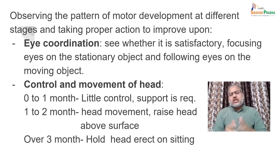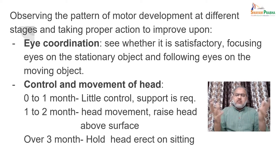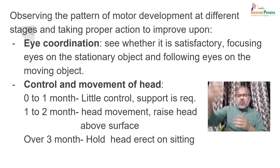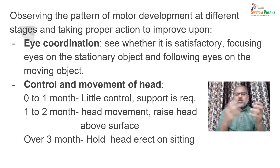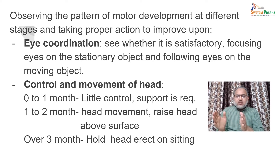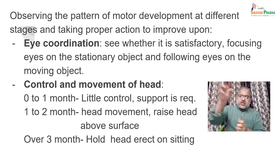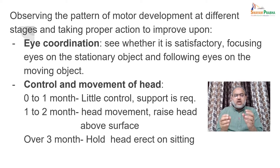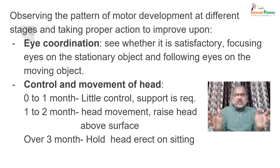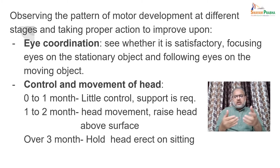Regarding eye coordination: you need to see whether the newborn baby has proper eye movement, whether it is satisfactory, whether the child is focusing eyes on stationary objects and following moving objects. At birth, children usually focus on stationary objects. After some time, the child starts moving their eyes left and right, up and down. If this is well coordinated, the development of eye coordination is satisfactory.